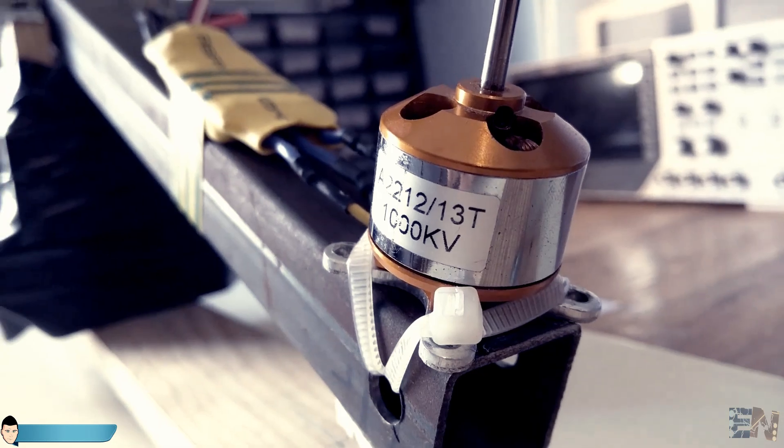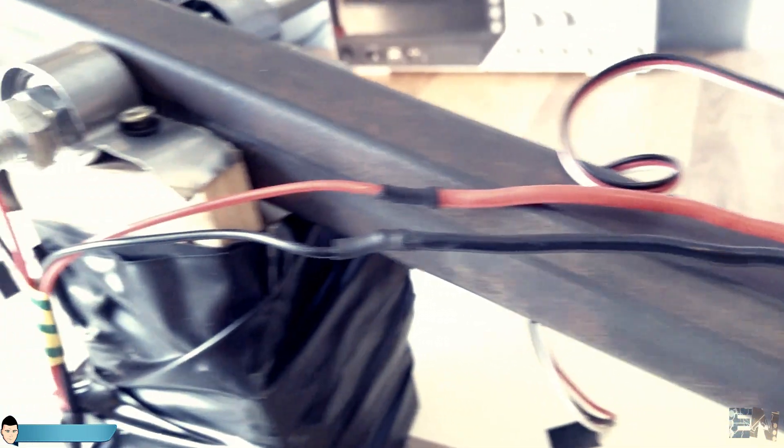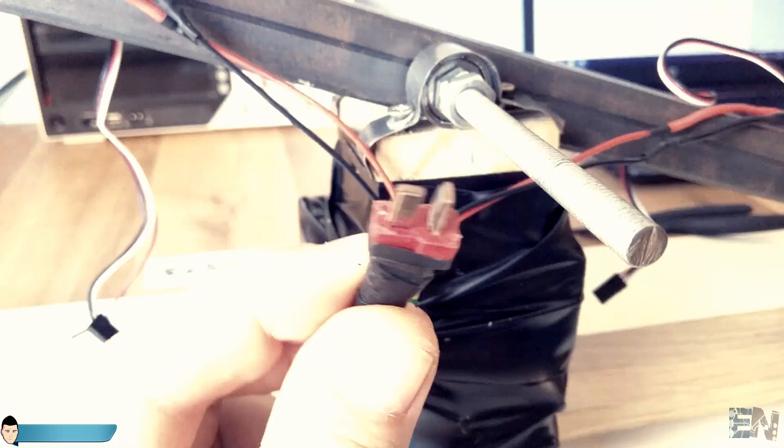The motors are connected following this schematic. Solder the ESCs to each motor and make sure that the motors will spin in these directions. I've soldered together the supply wires of each ESC and added a LiPo connector to the end.